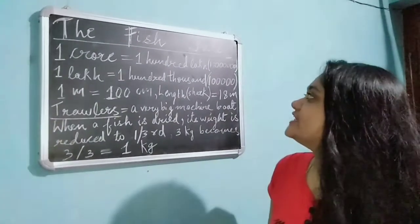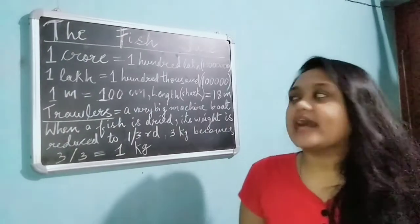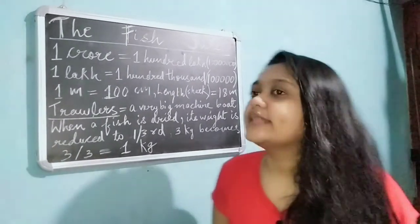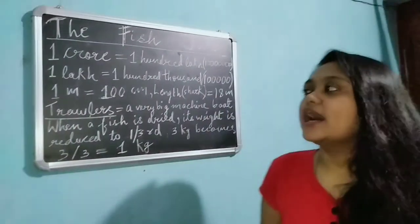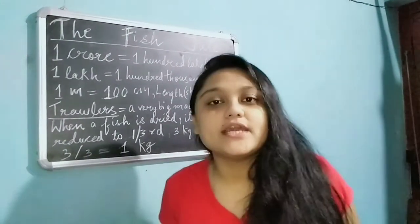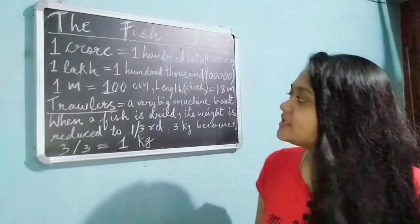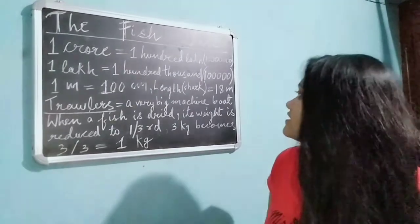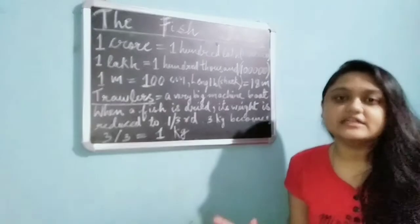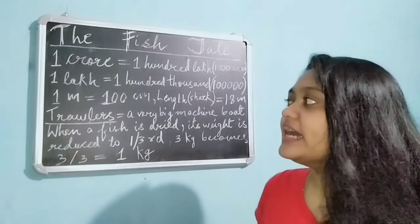One crore means 100 lakh and has seven zeros. One lakh means one hundred thousand and has five zeros. So one crore has seven zeros and one lakh has five zeros — this is very important. Also, one meter is equal to 100 centimeters, and the length of a shark is 18 meters.